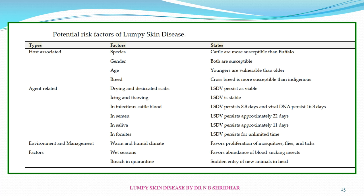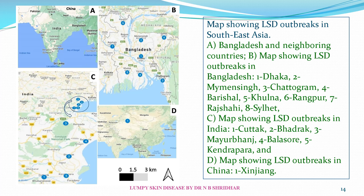Coming to gender, both male and female are susceptible. Younger animals are more vulnerable than older ones, and crossbred cattle are more susceptible than indigenous cattle. Wet seasons usually favor the abundance of blood-sucking insects, and the disease is transmitted by vectors.